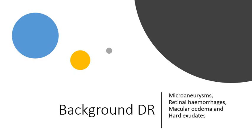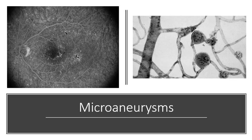So let's start with background diabetic retinopathy. The signs of background DR are microaneurysms, retinal hemorrhages, macular oedema, and hard exudates. In the next few slides, I'm going to show you images and explain all of these signs.